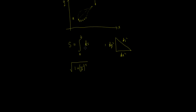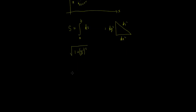Now we know that this function doesn't have any explicit dependence on x, it doesn't have any explicit dependence on y — the only explicit dependence it has is on y'. So we know from the previous video that we can use a simplified Euler-Lagrange equation. So what we want to show is that df/dy' equals some constant. Now f in this instance is this equation here — this is usually termed a characteristic equation.